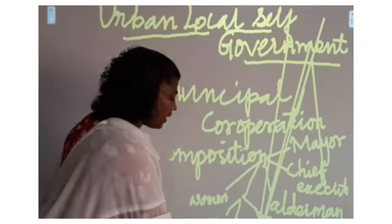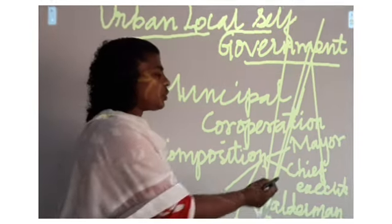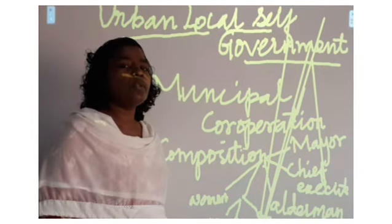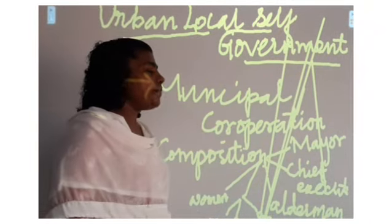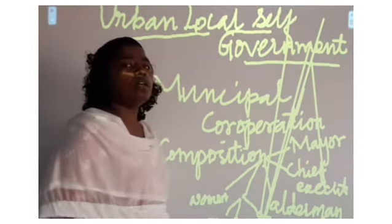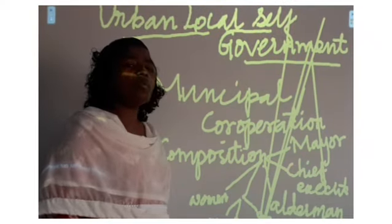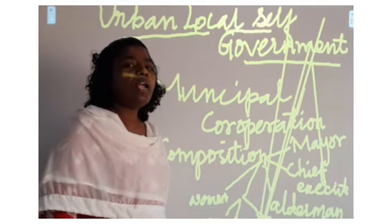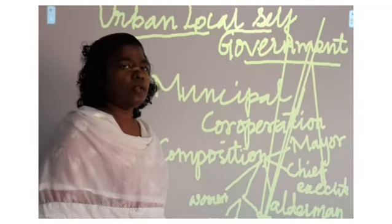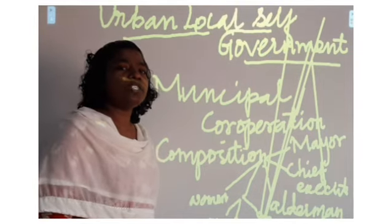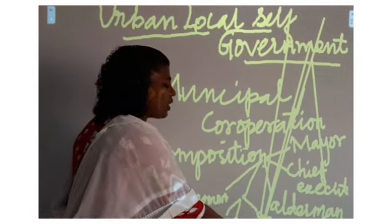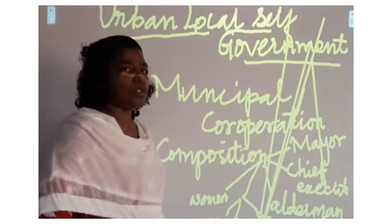The next position is the chief executive officer, also called the municipal commissioner. The time period of the municipal commissioner is 3 to 5 years. The elder man is the elderly, respected person from the particular city who takes part in the municipal corporation. Seats are also reserved for scheduled tribe, scheduled caste, and OBC groups, as well as for women.